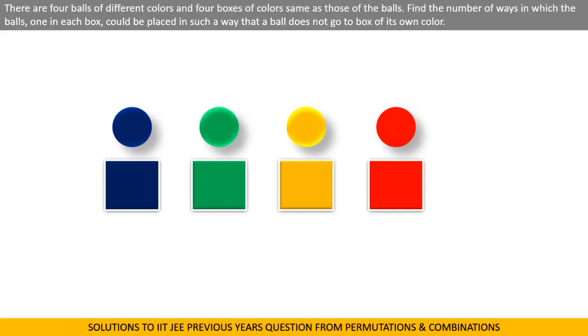Welcome back again. Let the color of four balls be blue, green, yellow, and red, and four rectangular boxes are also in blue, green, yellow, and red color. Knowing the fact that a ball does not go to a box of its own color, choose any ball out of four balls. Then it can be put in different color boxes in three ways.